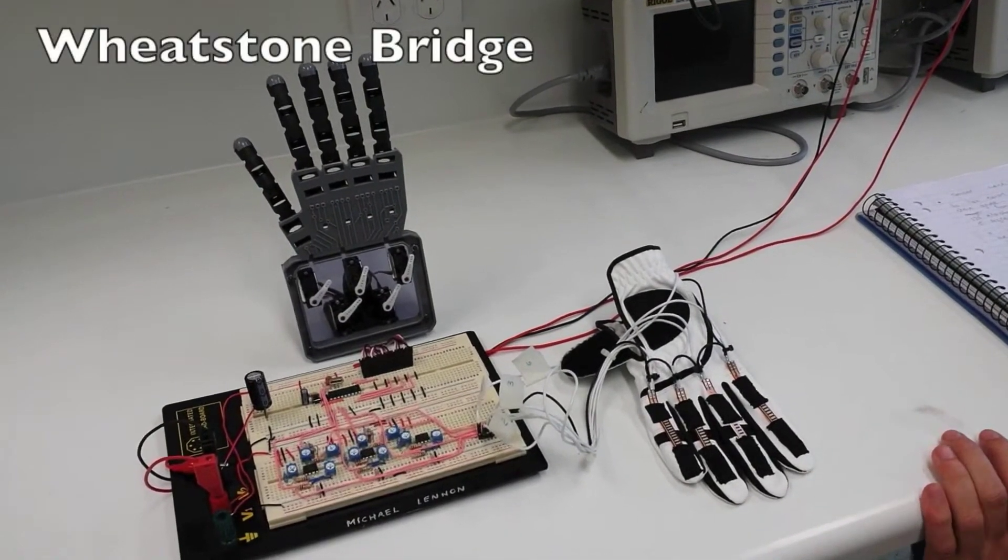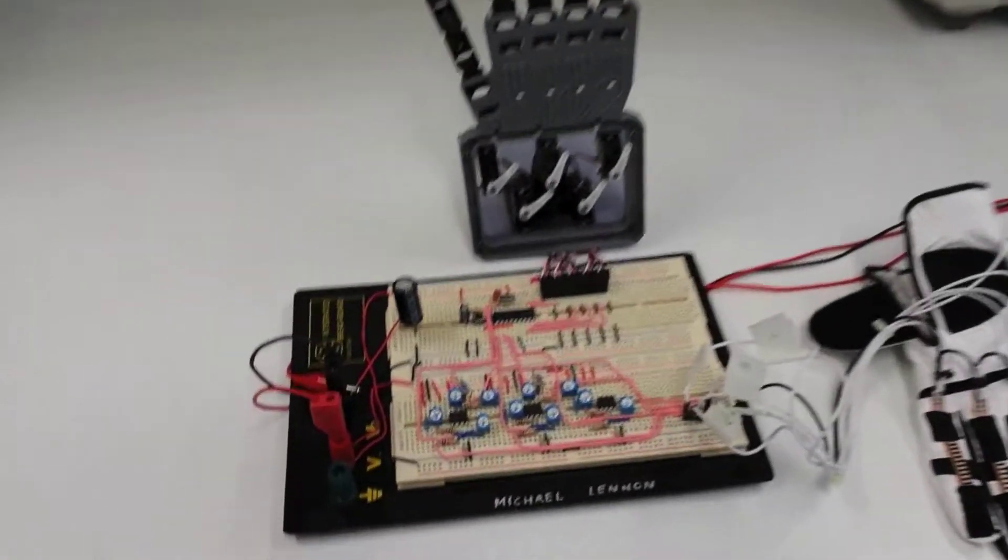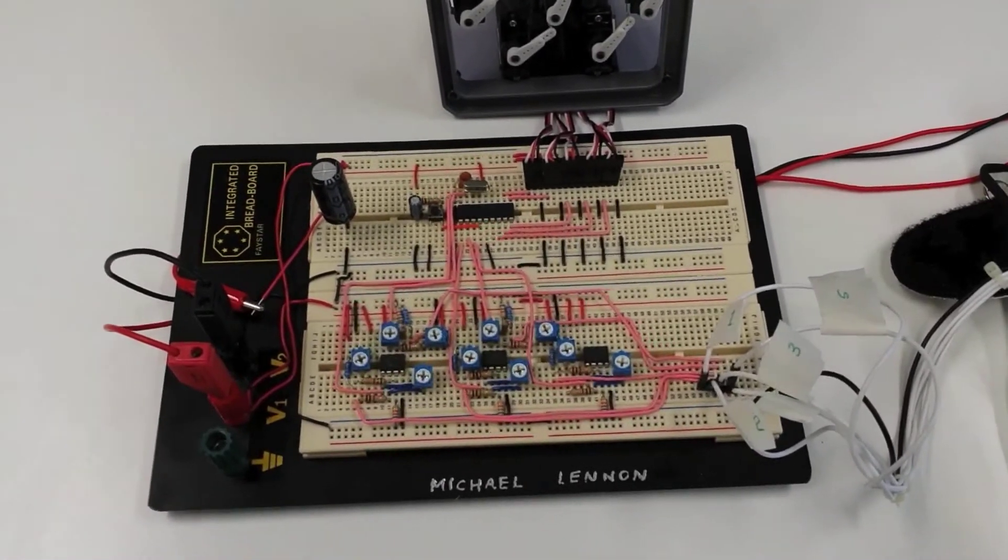A Wheatstone bridge converts the change of resistance to a voltage. This voltage is then amplified using a difference amplifier.